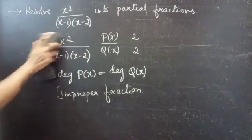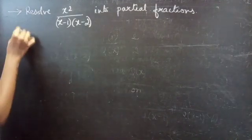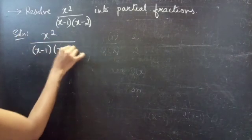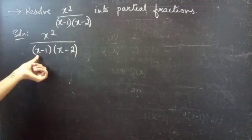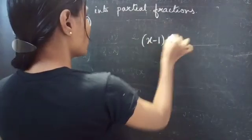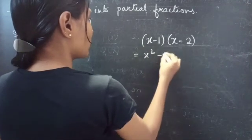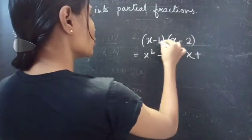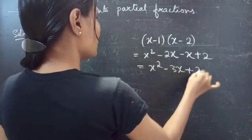We are given an improper fraction. Coming to the problem: consider the improper fraction x squared by x minus 1 into x minus 2. In the numerator we have x squared and in the denominator x minus 1 into x minus 2. Let's simplify the denominator: x times x is x squared, x times minus 2 is minus 2x, minus 1 times x is minus x, and minus 1 times minus 2 is plus 2. So this equals x squared minus 3x plus 2.